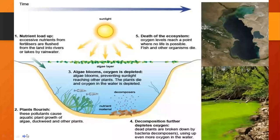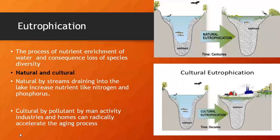Clear about this? So cultural eutrophication is entirely depending on man-made activities, whereas natural is from the soil, from washed-away fertilizers, by the water — natural eutrophication takes place.